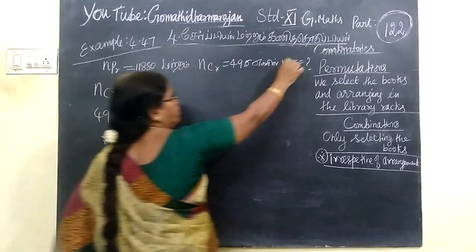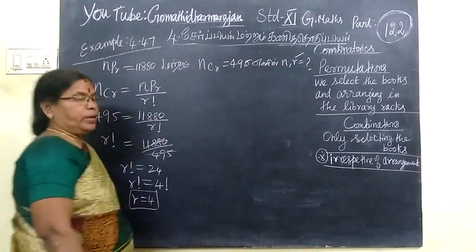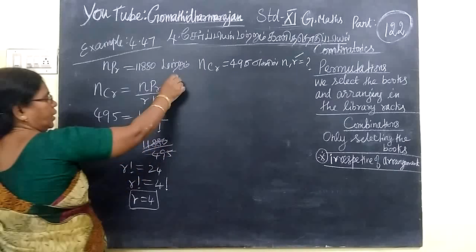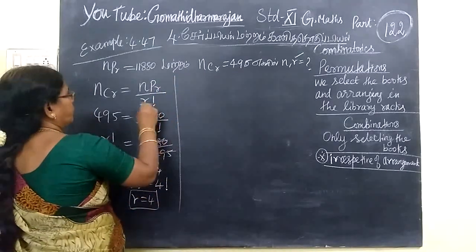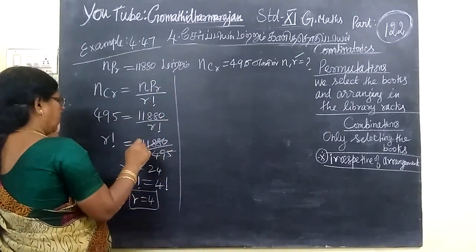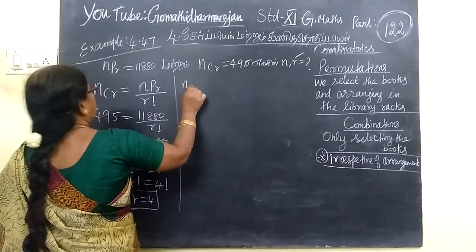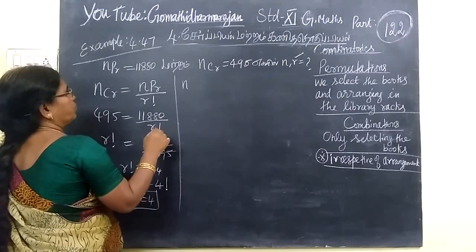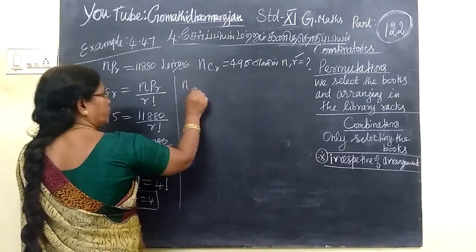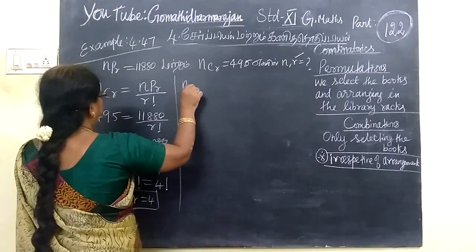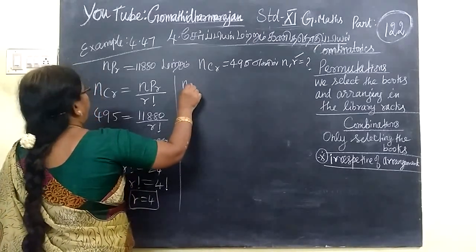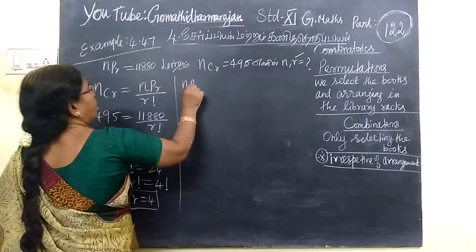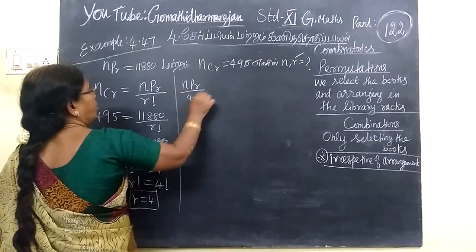Now we have one value. Next we have to find N. So for that, NCR is brought and we substitute the value. NCR, you have to find NCR by 4 factorial.